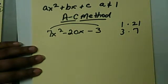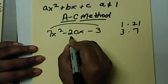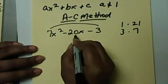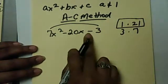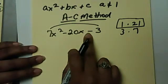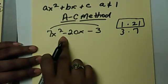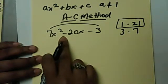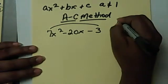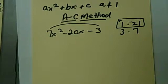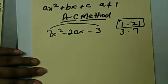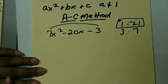In the AC method, after you find your two numbers, in this case, our two numbers that will give us the middle term is going to be these two. And remember, from the last video, if this is a minus, that means they're going to be opposite signs. And this sign tells us the sign of the higher number. So we have negative 21 and positive 1.